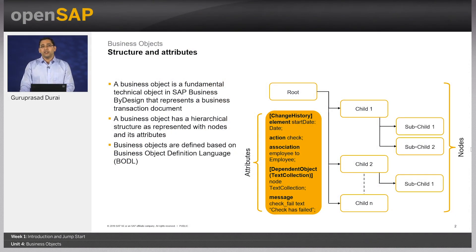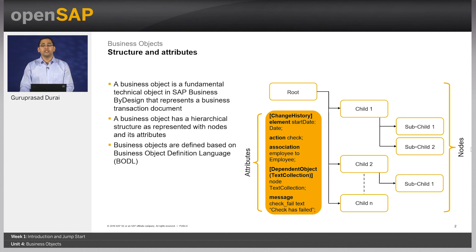A business object is a technical object which represents any business transaction document in SAP Business by Design. For example, the underlying business object for a sales order business document is a sales order business object. Business objects can be of two types: standard or custom business objects. Standard business objects are delivered by SAP, for example sales order or purchase order, and custom business objects are created by partners or customers through the Cloud Studio.